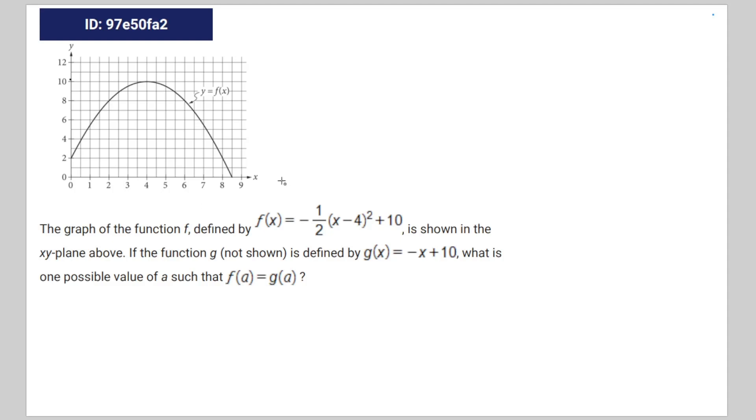So we're given the following math question. The graph of the function f defined by f(x) = -1/2(x - 4)^2 + 10 is shown in the xy plane above. If the function g, not shown, is defined by g(x) = -x + 10, what is one possible value of a such that f(a) = g(a)?